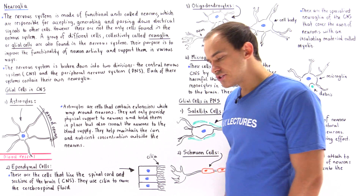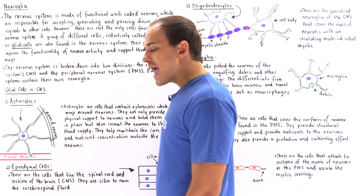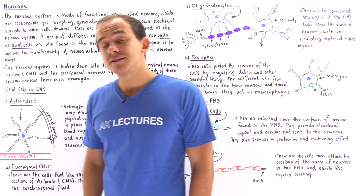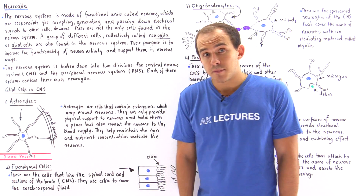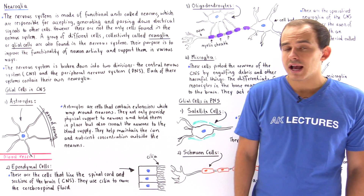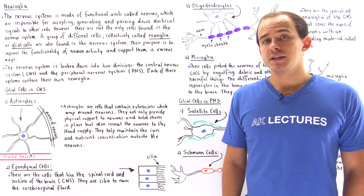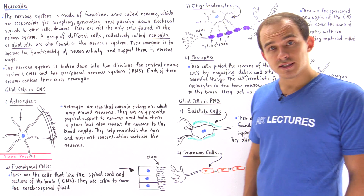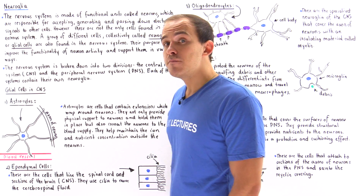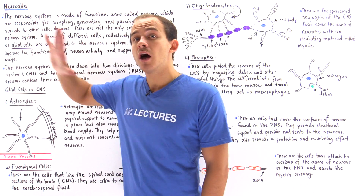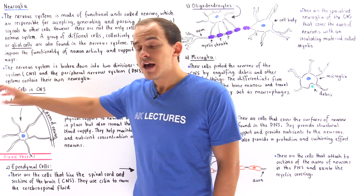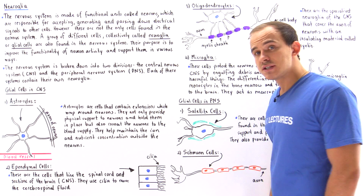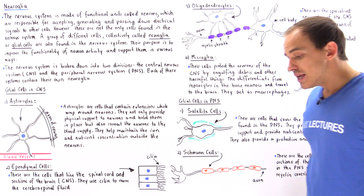Now the question is, are there any other cells found inside our nervous system, inside the body, aside from these neurons? And the answer is yes. In fact, we have many more of these other cells found inside our nervous system than our neurons.